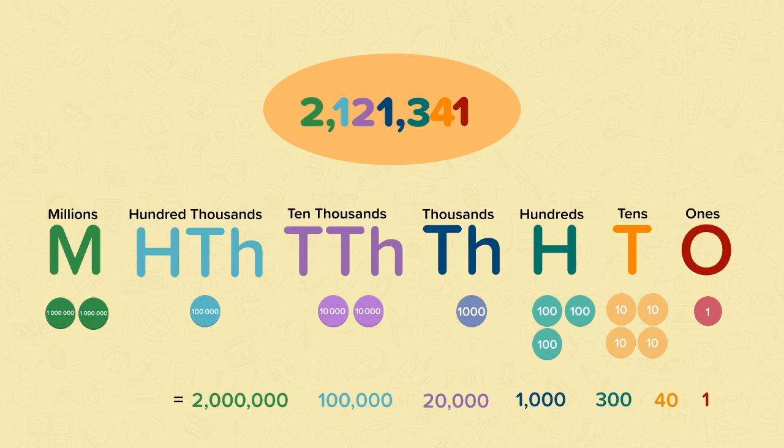When the number is split up in this way, this is called the expanded form. You can add the numbers in the expanded form to get the original number.